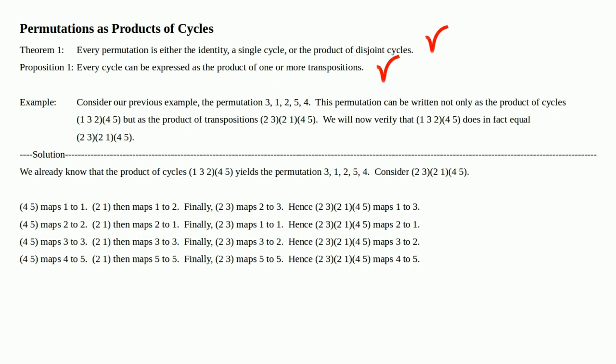The transposition (4, 5) maps 4 to 5. The transposition (2, 1) then maps 5 to 5 because 5 doesn't appear in that transposition. Finally, the transposition (2, 3) maps 5 to 5 again because 5 doesn't appear in that transposition either. Hence, (2, 3) times (2, 1) times (4, 5) maps 4 to 5. So 4 goes to 5, which then stays at 5, and therefore 4 goes to 5.